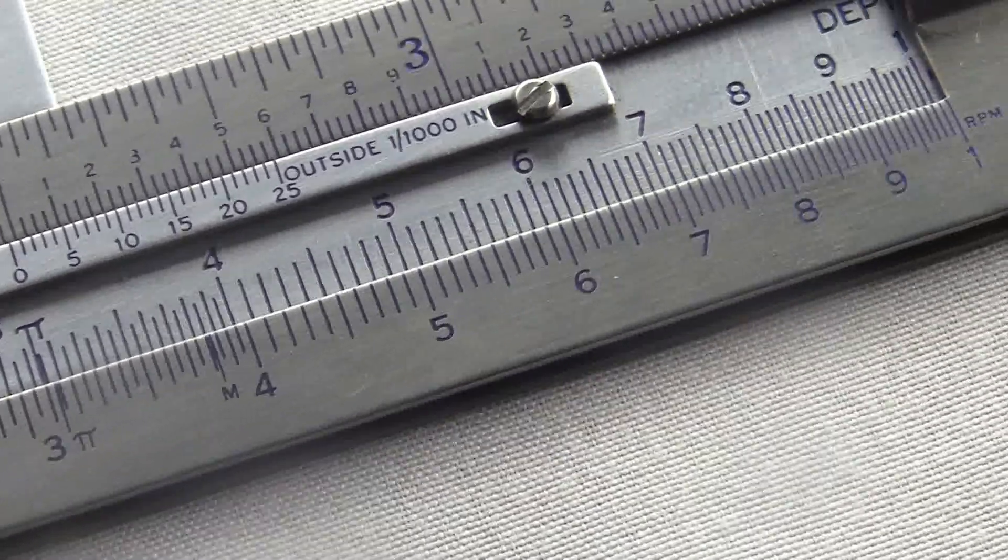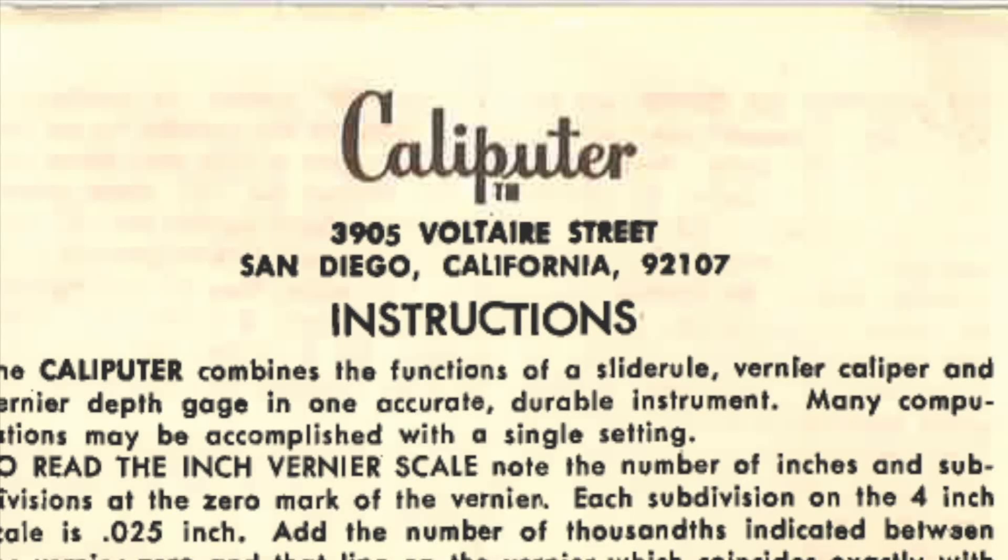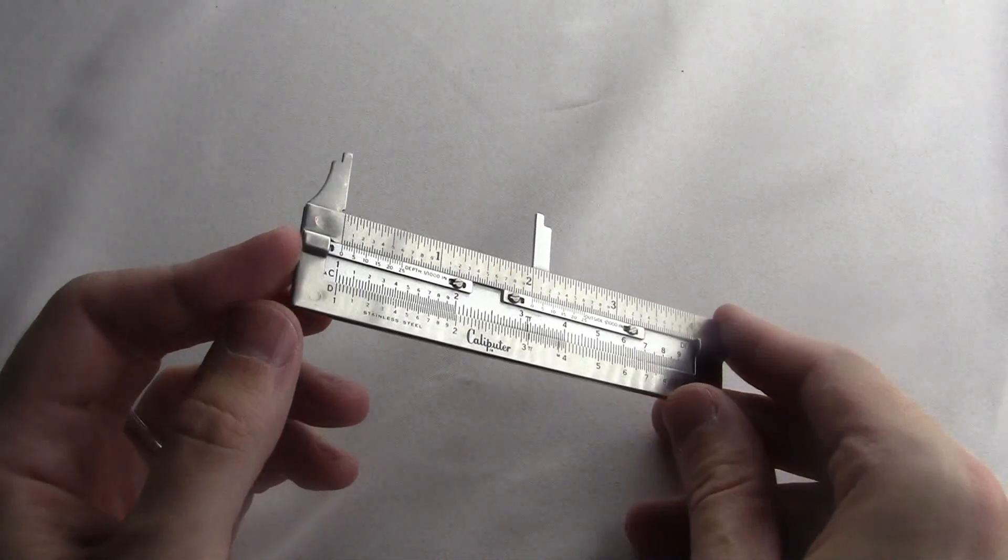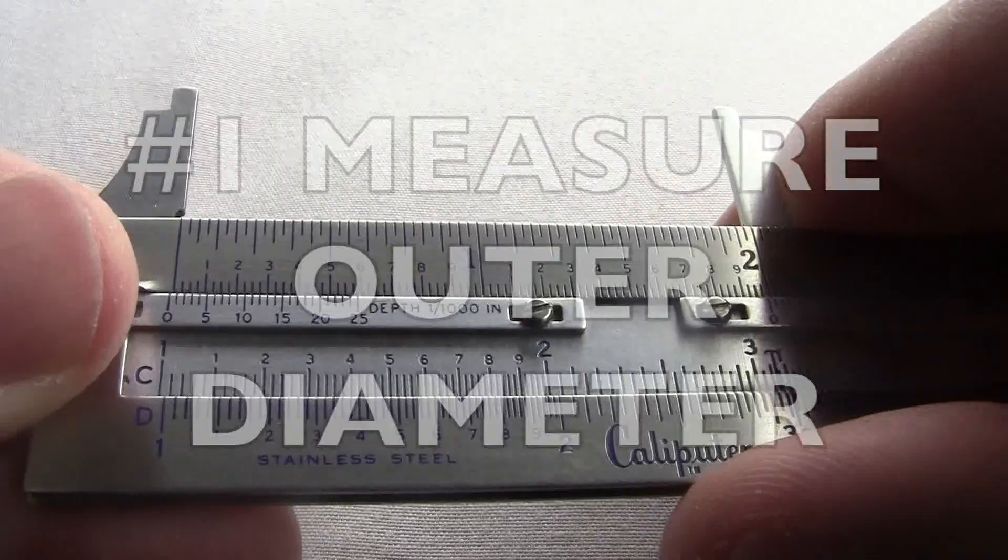Put these words together in the stupidest way possible, and you get Caliputre. According to the instructions, this thing does eight different types of measurements and computations. So let's get right to it.